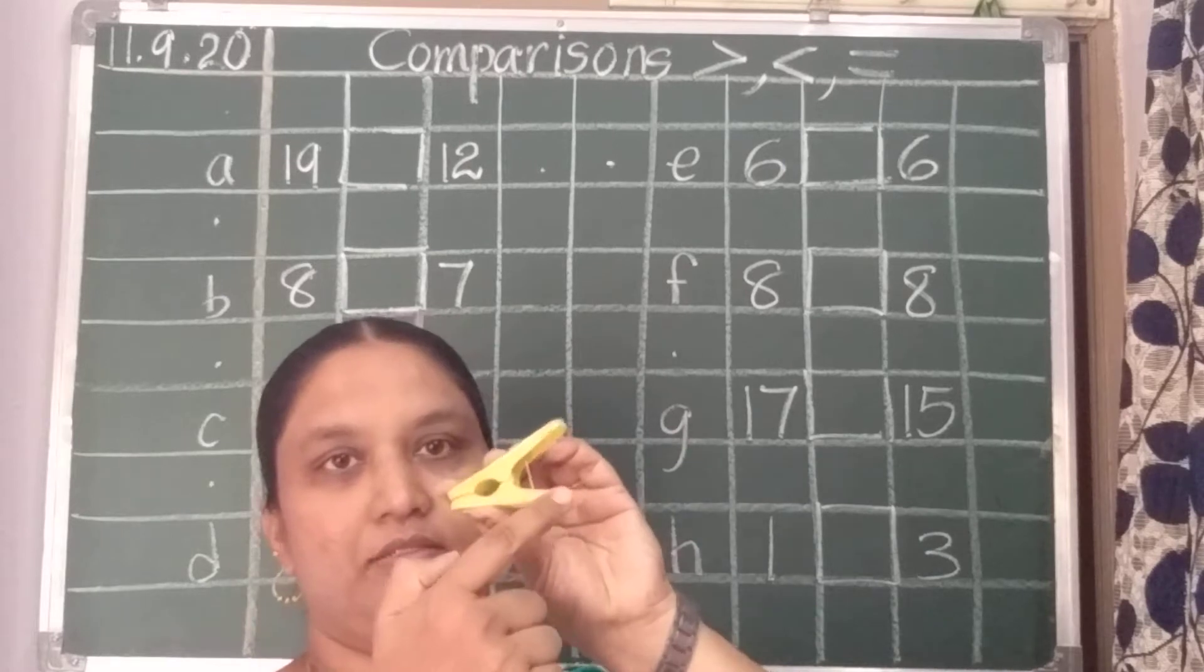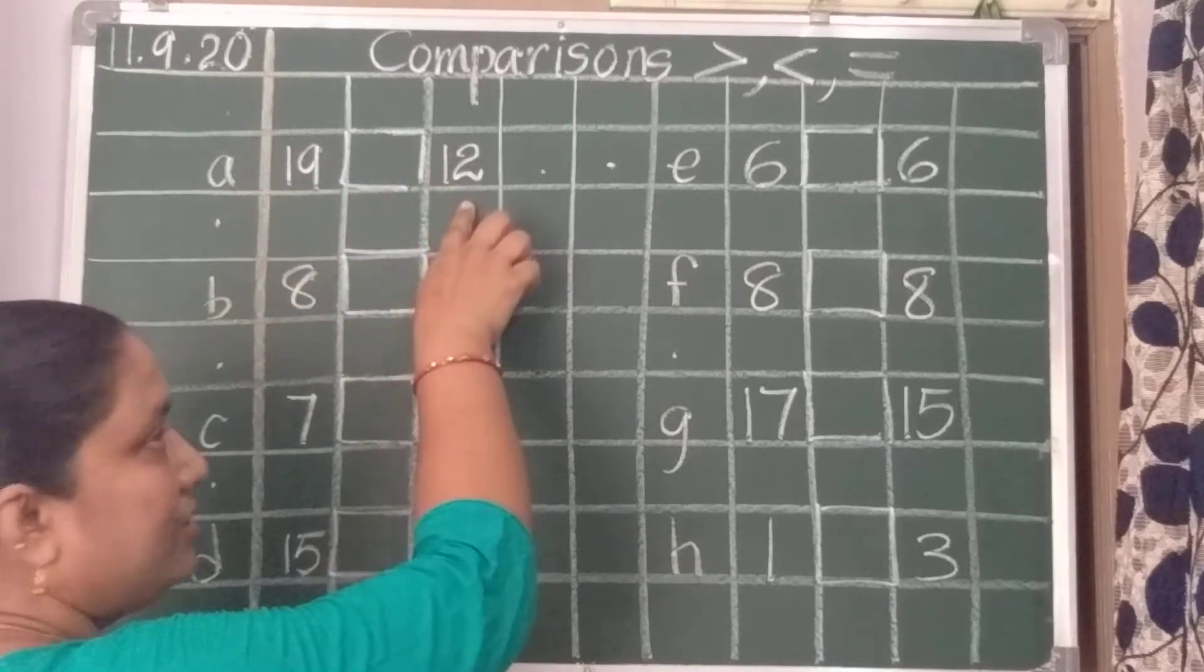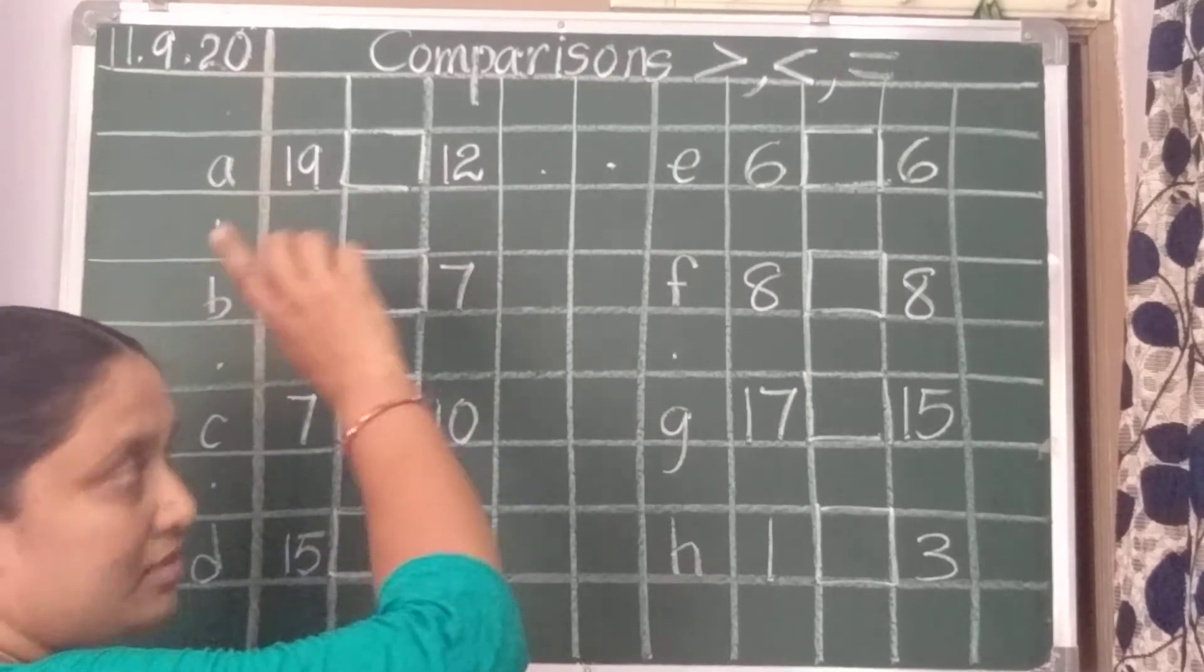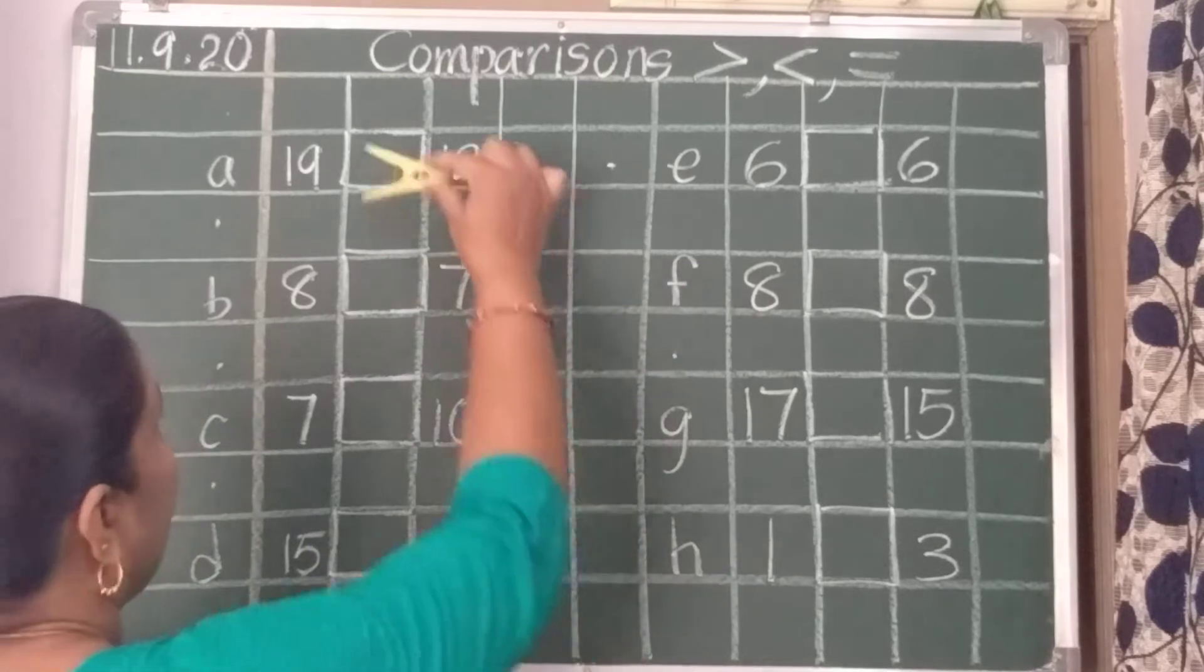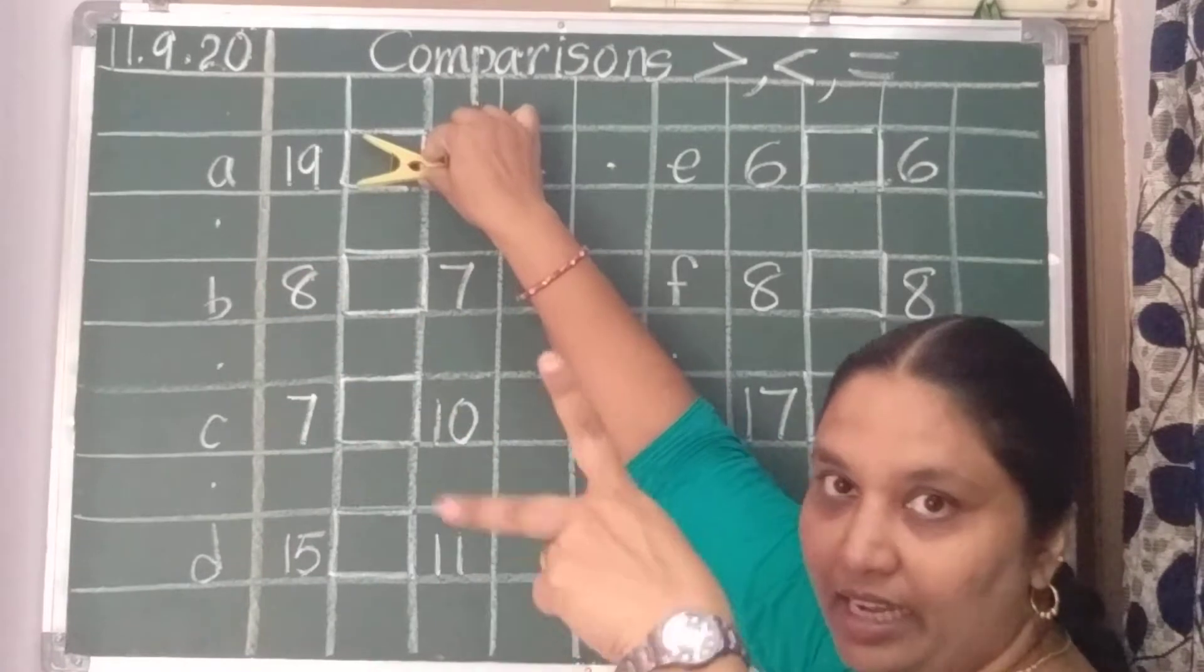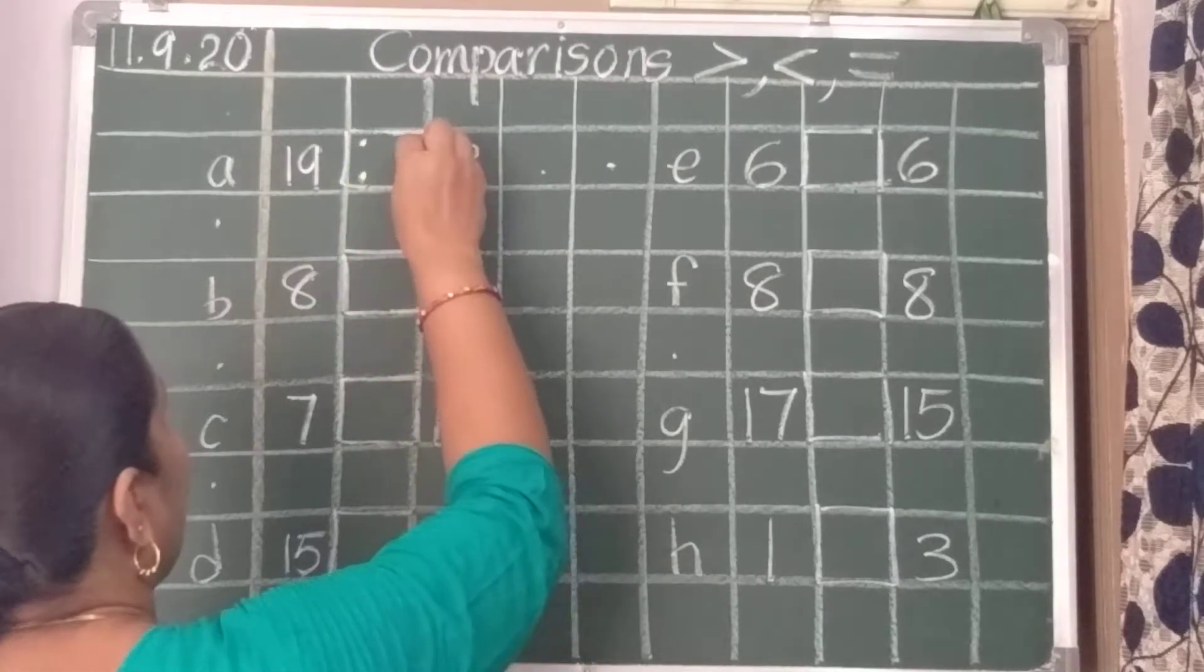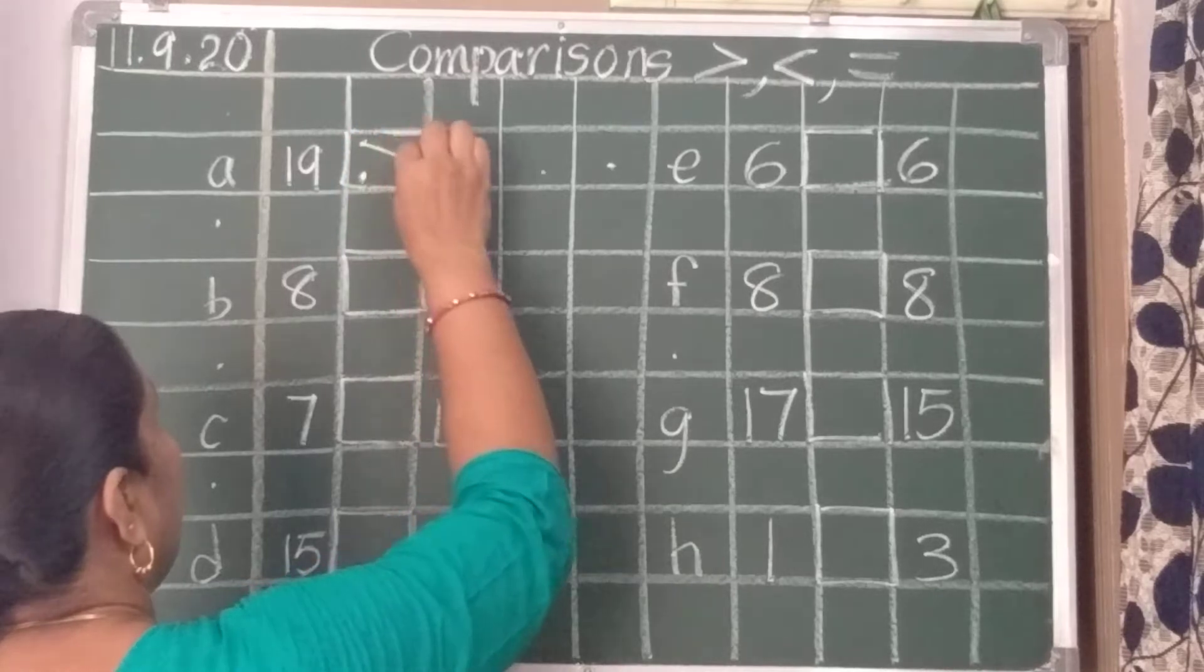Like this. So see, the numbers are 19 and 12. Which is the biggest number? 19 or 12? 19 is greater than 12. So the crocodile mouth will be open to the 19 side, like this. Because this is the big number, what you should do is place two dots here and in the middle of this box, one dot. Now, join the dots.